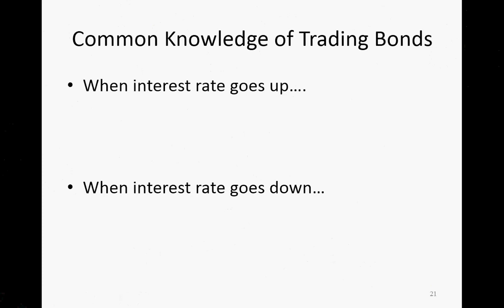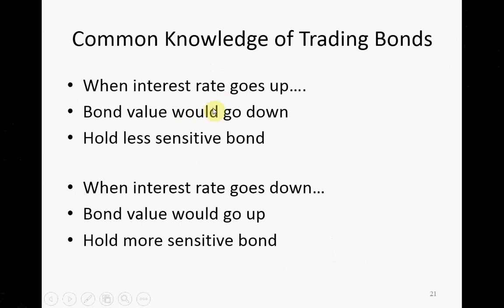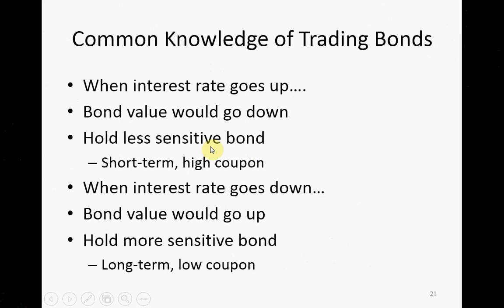When trading bonds, if you think interest rate is going up, bond price will go down, so you should choose low-sensitive bonds because their value goes down by less. Hold less sensitive bonds if you think interest rate is going up — those bonds have a less price decline. When interest rates go down and bond prices increase, you want to hold more sensitive bonds because the price increase will be higher. Short-term, high-coupon bonds are less sensitive; long-term, low-coupon bonds are more sensitive. Remember that conclusion — you'll be tested on it in your mid-term exam.